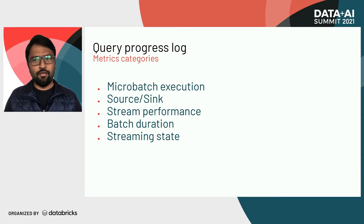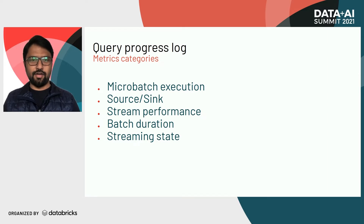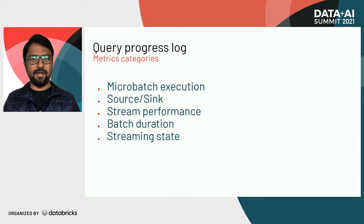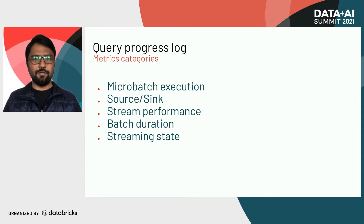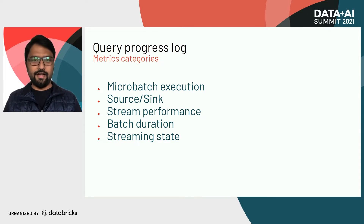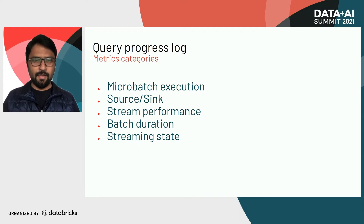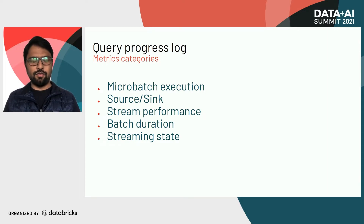At a high level, we can divide the metrics inside query progress logs into five different categories. The first is micro batch execution — metrics describing the micro batch itself, such as the ID of your streaming query, which micro batch it is, when it triggered, and so on. The second is source and sink metrics, which represents the state of your source and how much data was pulled from the source in that particular micro batch, and what went into the sink.